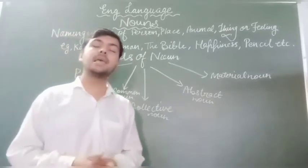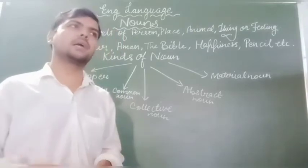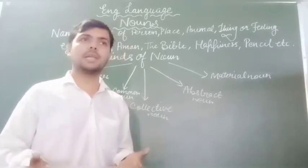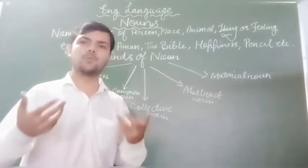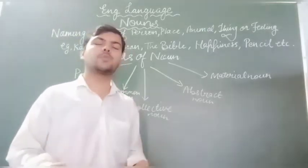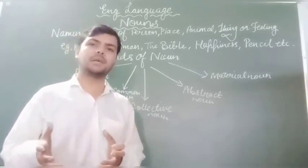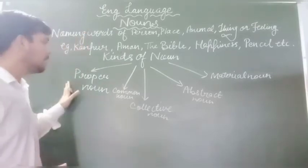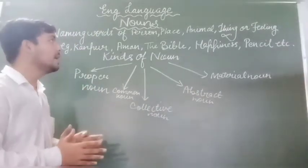Material Noun यानि द्रव्य वाचक संज्ञा — the substances which are used to prepare or make goods। वह चीज़ें या पदार्थ जिनसे आप वस्तु का निर्माण करते हैं। जैसे खीर बनाने के लिए Rice, Milk, Water, Sugar का यूज़ करते हैं; furniture के लिए Iron Nails और Wood। कपड़ों में Plastic buttons, Woolen, Polyester, Cotton — यह सब material हैं। So, material noun are those substances which help us to make goods or things।